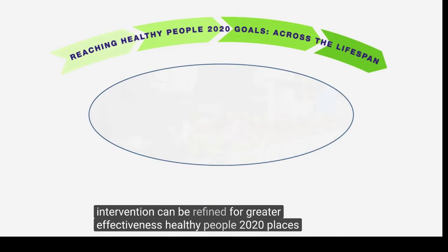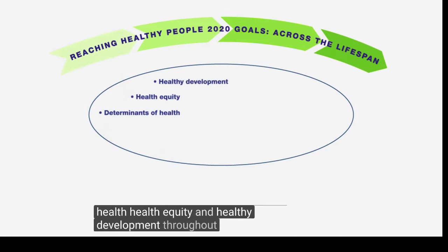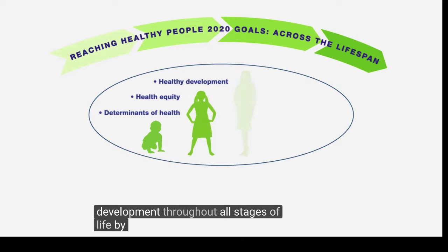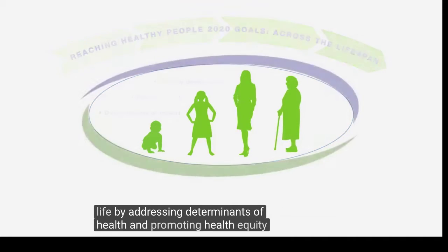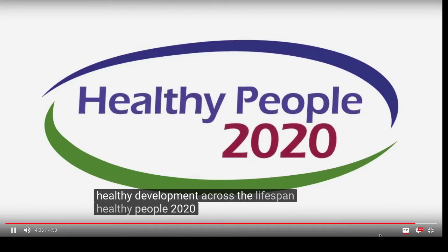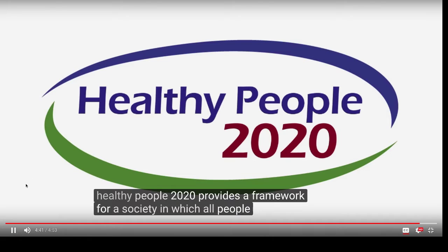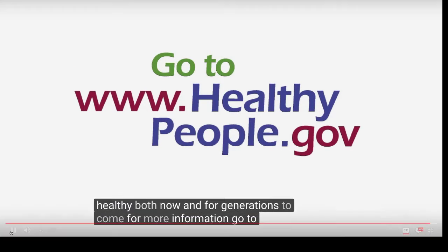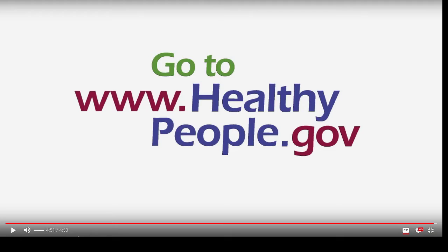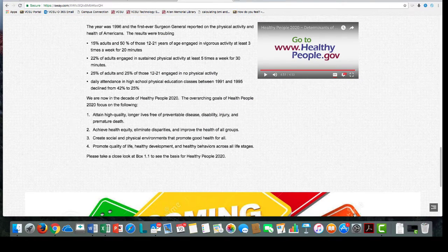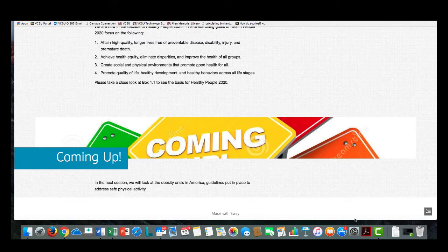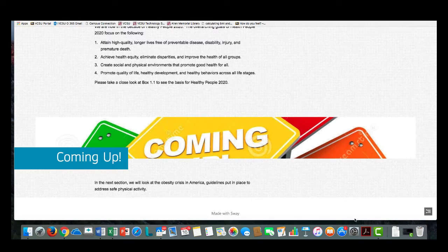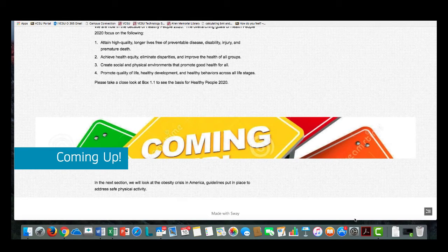Healthy People 2020 places renewed emphasis on determinants of health, health equity, and healthy development throughout all stages of life. By addressing determinants of health and promoting health equity and healthy development across the lifespan, Healthy People 2020 provides a framework for a society in which all people can be healthy, both now and for generations to come. For more information, go to www.healthypeople.gov. Please take a close look at box 1.1 in your textbook to read more about the basis for Healthy People 2020. In the next section, we will look at the obesity crisis in America and guidelines put into place to address safe physical activity.